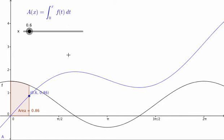What I've got shown in the graph here is a graph of the function f of t, shown in black here. And the blue function is defined this way. It's the function a of x equals the definite integral from 0 to x of f of t dt.